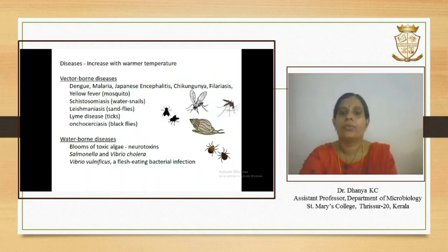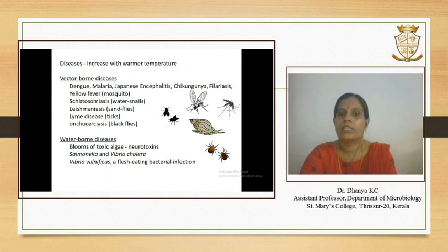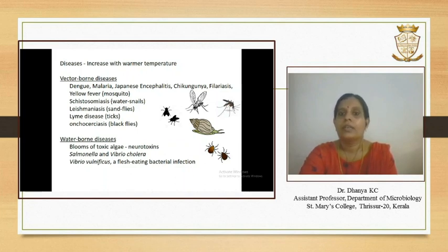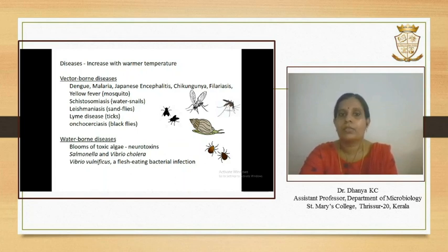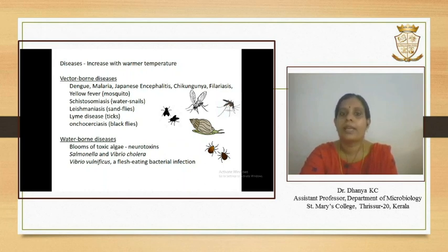Examples of vector-borne diseases whose occurrence increased with increase in temperature include dengue, malaria, Japanese encephalitis, chikungunya, filariasis, and yellow fever — where the vector is a mosquito. In the case of schistosomiasis, the vector is water snails; for leishmaniasis, the vector is sand flies; for Lyme disease, the vector is ticks; and for onchocerciasis, the vector is black flies.